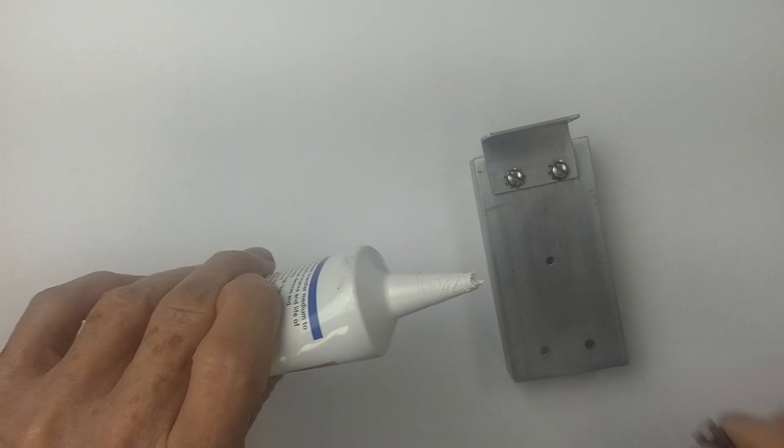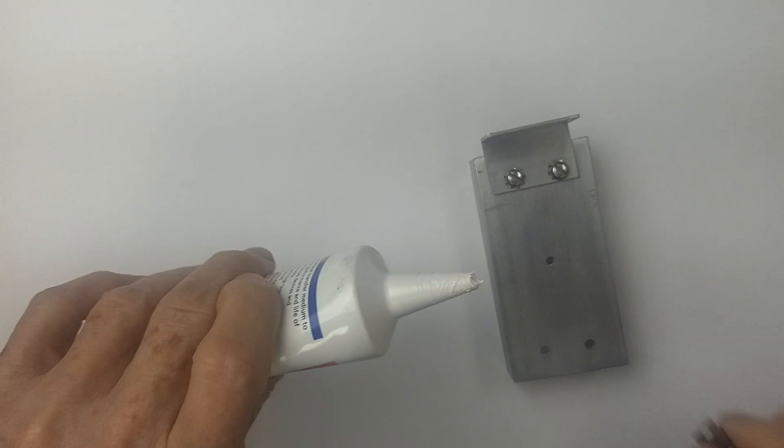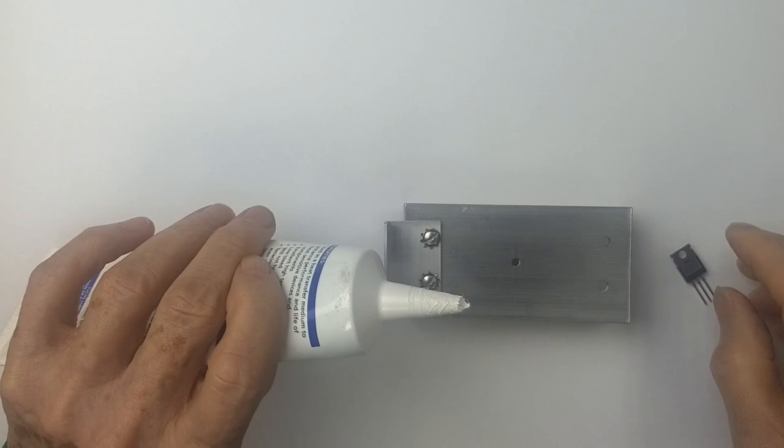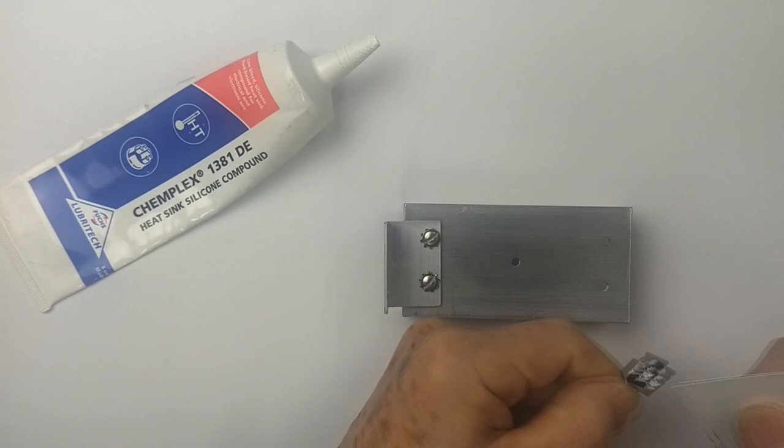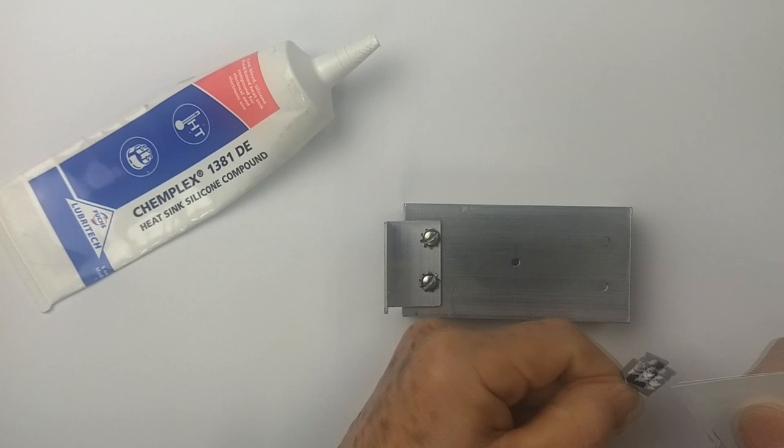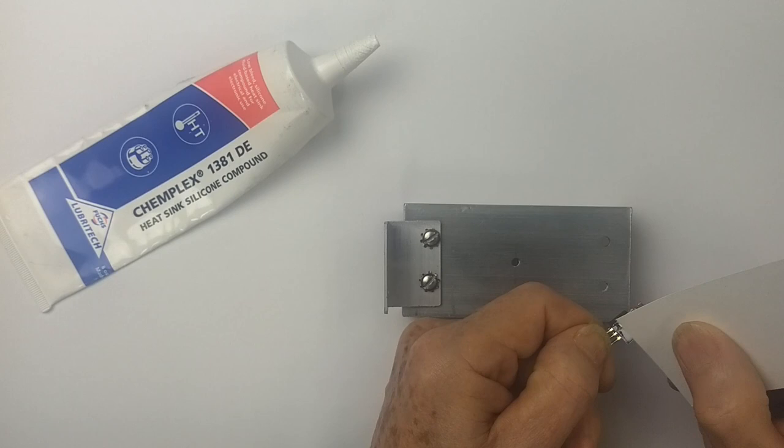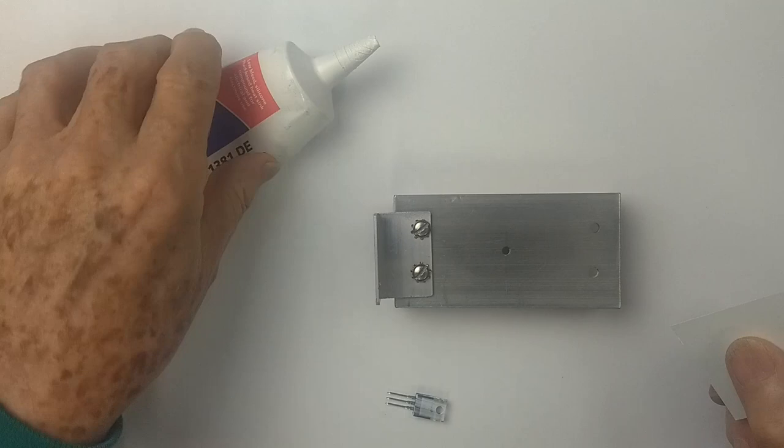Now we're going to mount this device on this heat sink. So what we want to do is apply a little bit of the compound, and then with something like a business card, we want to spread it around, and then wipe the majority of it off.